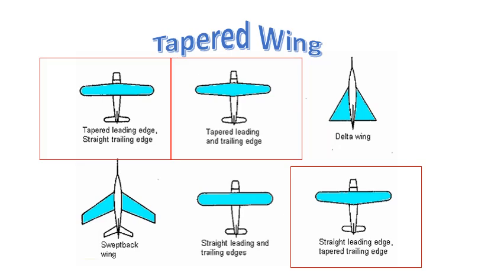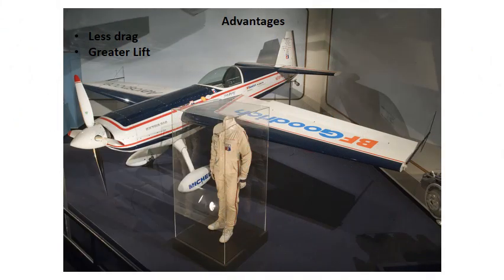Tapered wings are a variation of the straight wing, where you start tapering either the leading edge, the trailing edge, or both. Here's an example of an aerobatic airplane actually flown by Patty Wagstaff for two of her championships, and now resides in the National Air and Space Museum. You can see it's a straight wing with a leading and trailing edge taper. The advantage is it generates less drag for a given aspect ratio, and it also generates a little bit greater lift — you can go a bit faster because of the reduced drag.